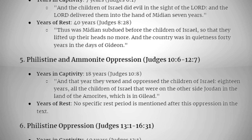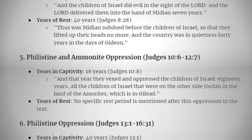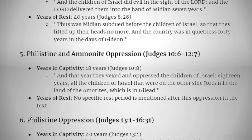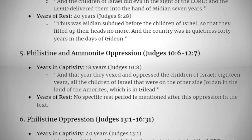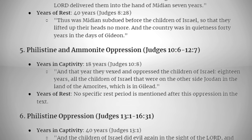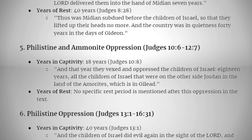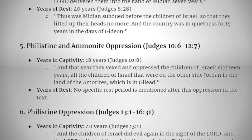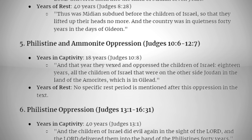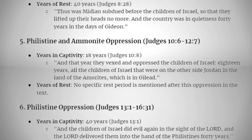Philistine and Ammonite oppression (Judges 10:6–12:7): years in captivity — 18 years. Judges 10:8: "And that year they vexed and oppressed the children of Israel 18 years, all the children of Israel that were on the other side Jordan in the land of the Amorites which is in Gilead." Years of rest: no specific rest period is mentioned after this oppression in the text.